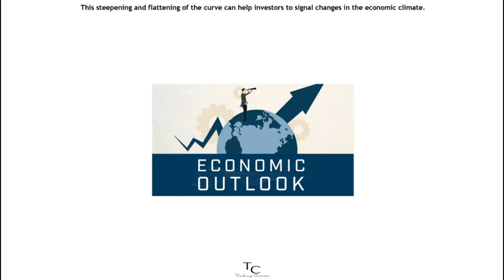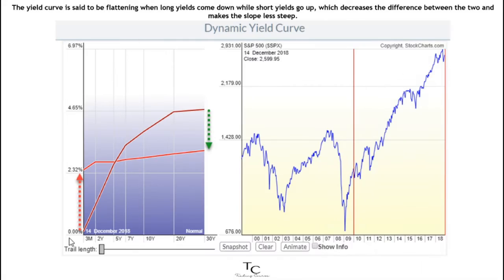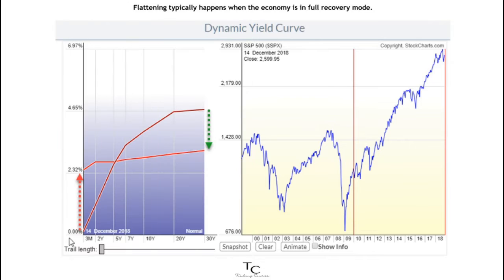This steepening and flattening of the curve can help investors signal changes in the economic climate. The yield curve is said to be flattening when long yields come down while short yields go up, which decreases the difference between the two and makes the slope less steep. Flattening typically happens when the economy is in full recovery mode.